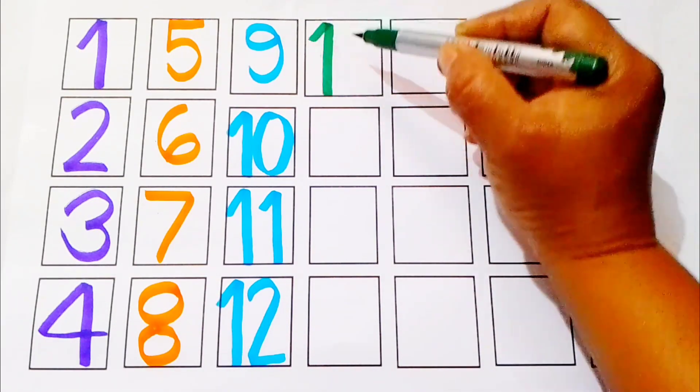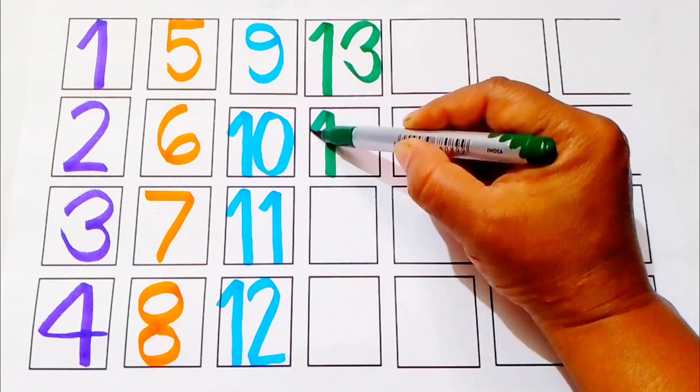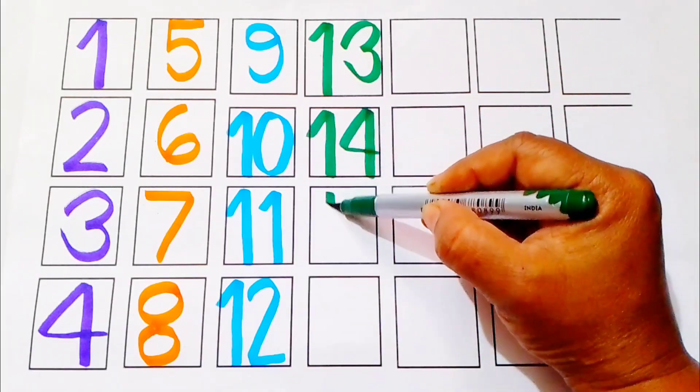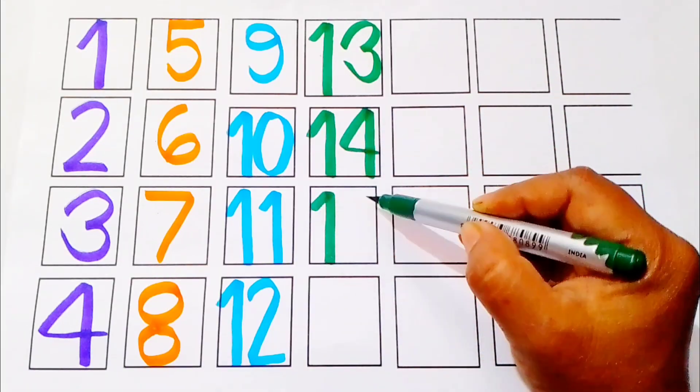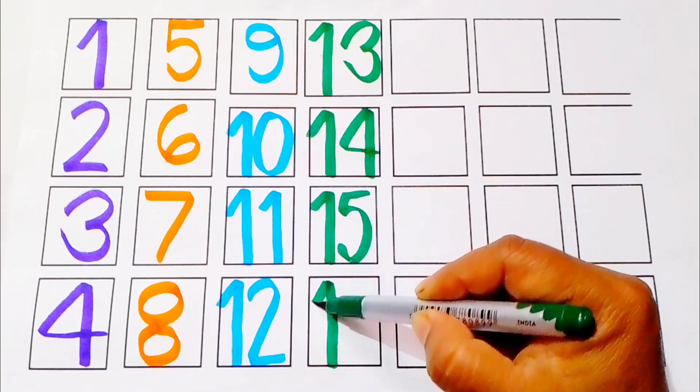Dark green color. One, three. Thirteen. One, four. Fourteen. One, five. Fifteen. One, six. Sixteen.